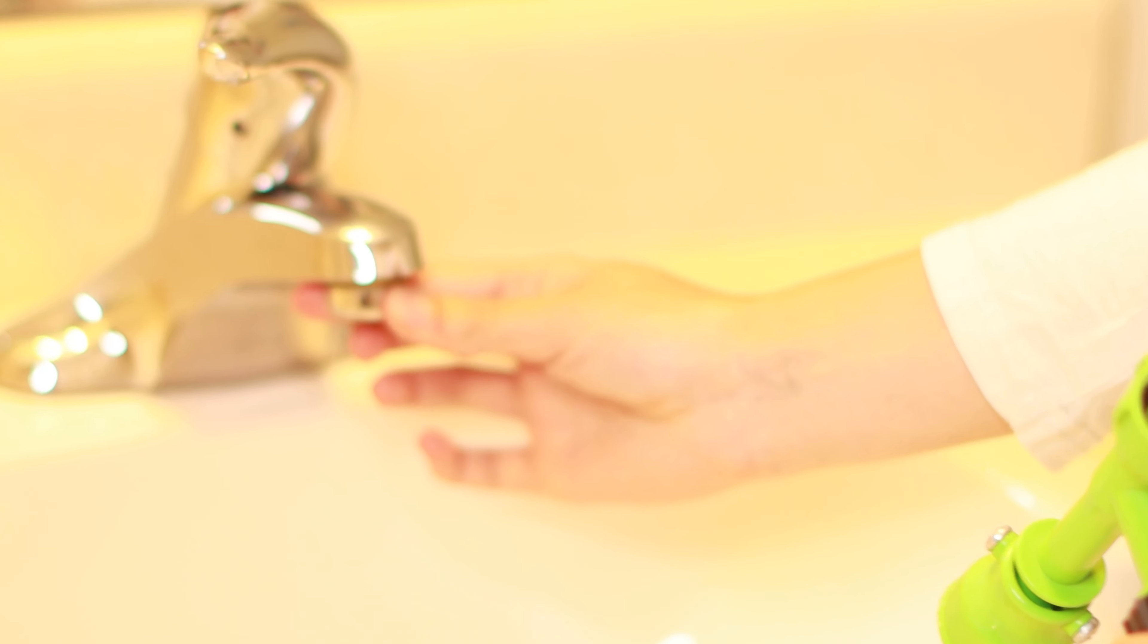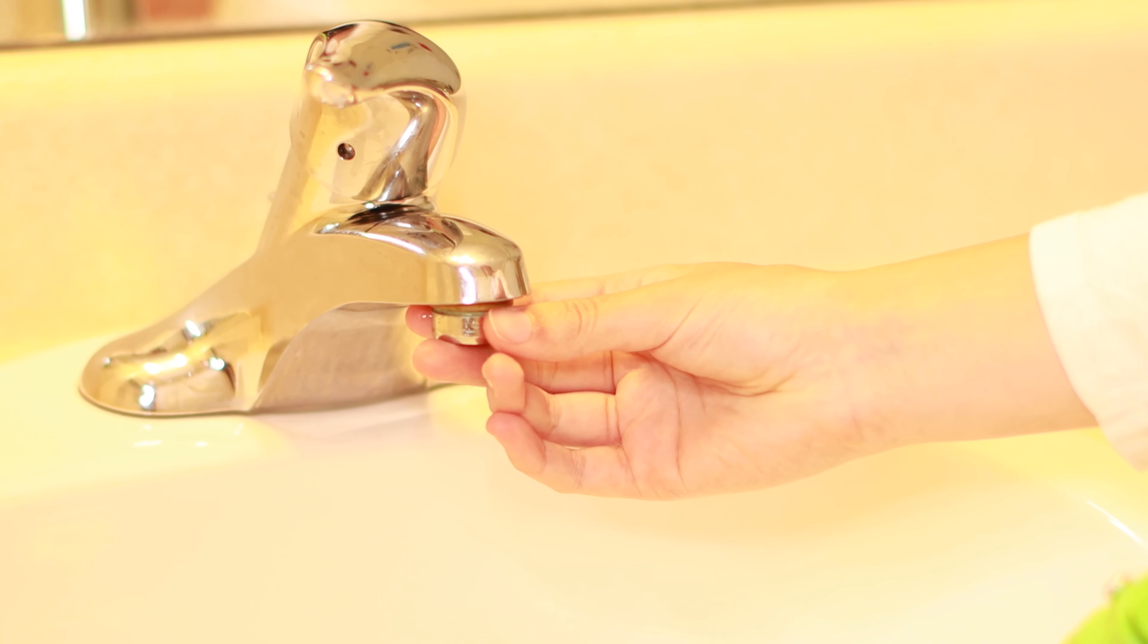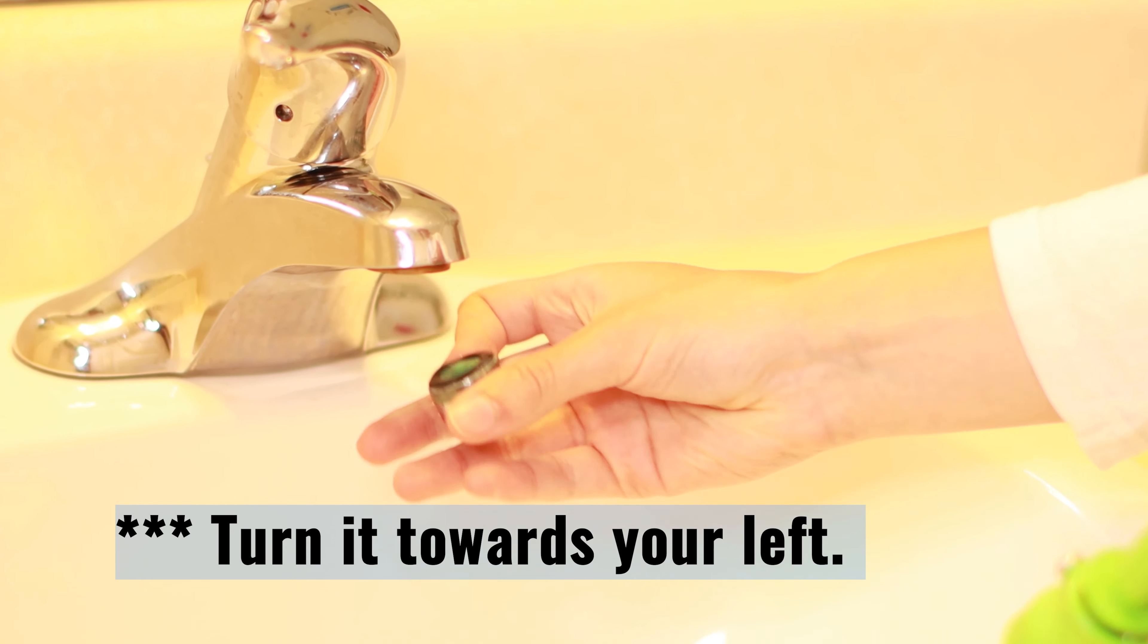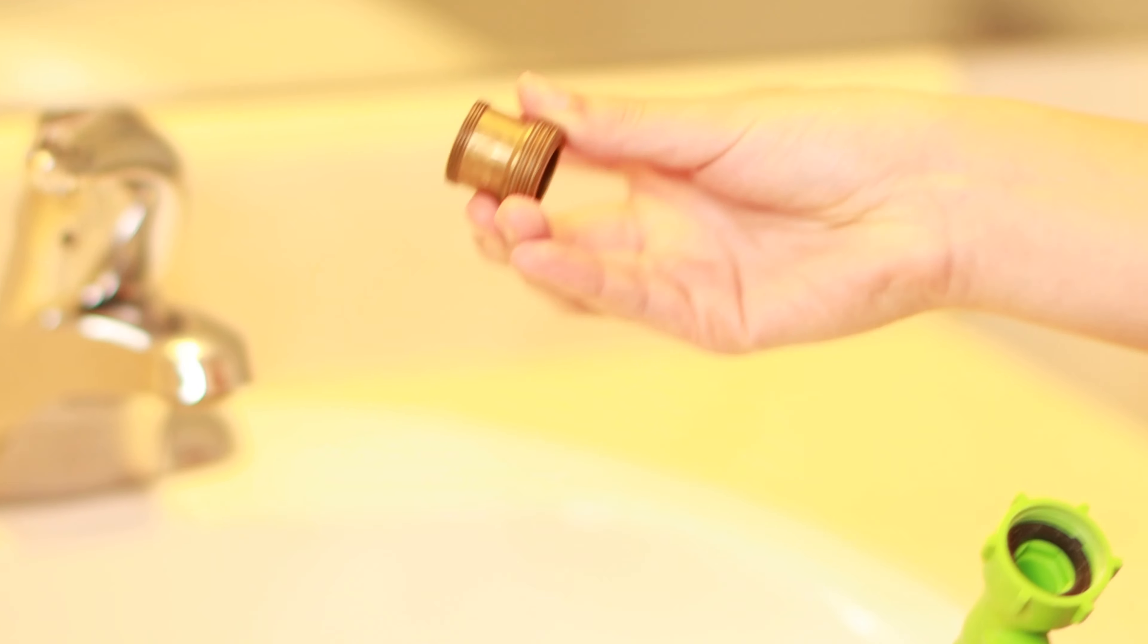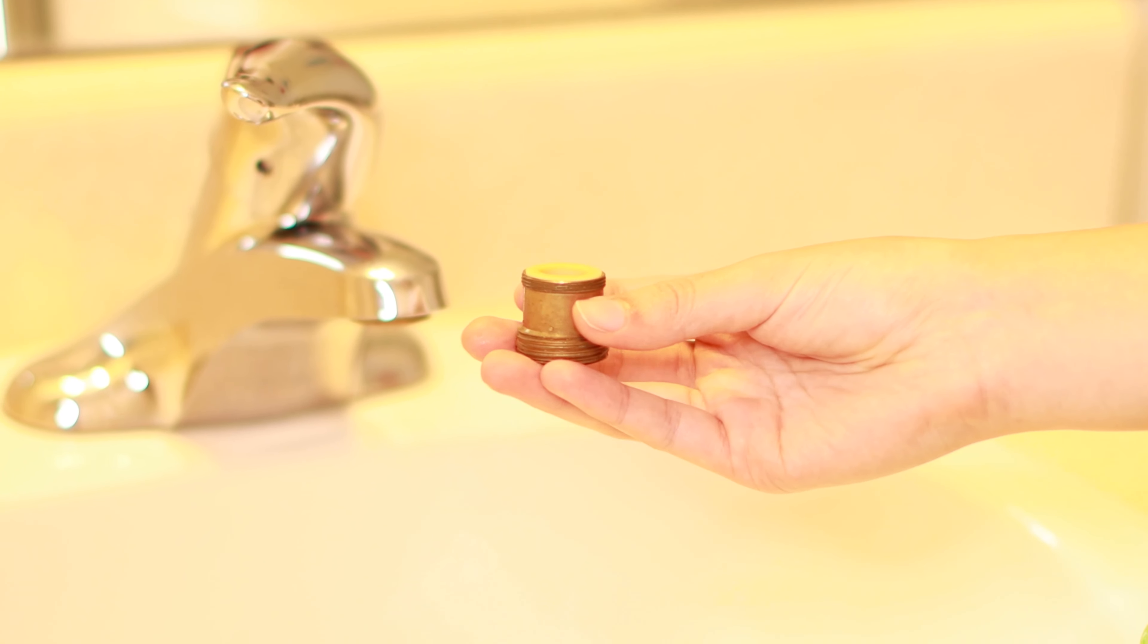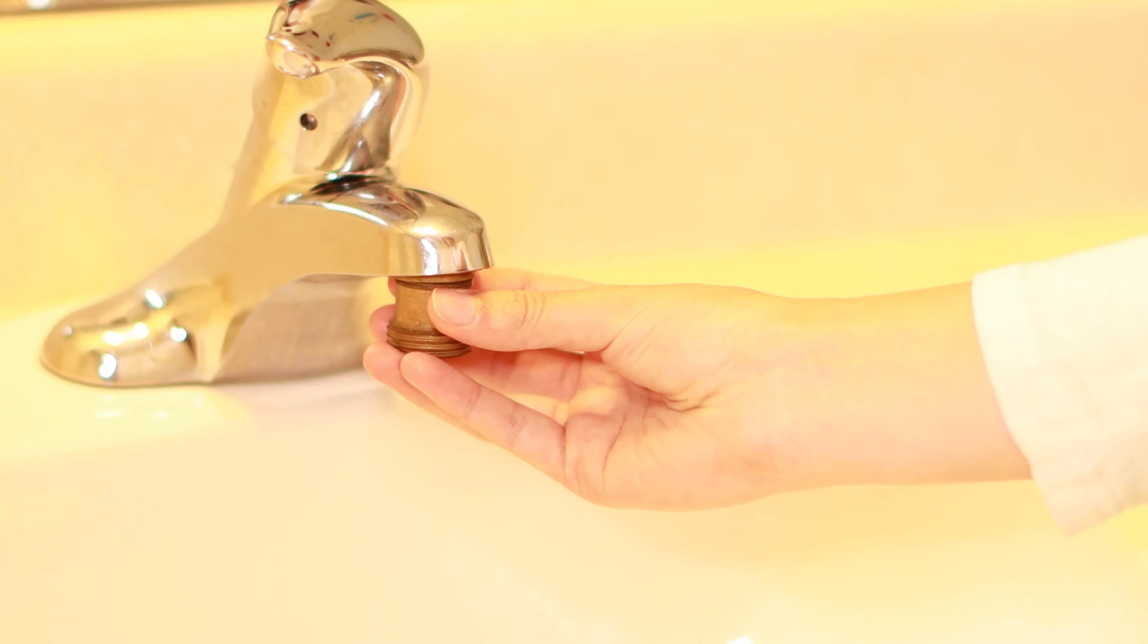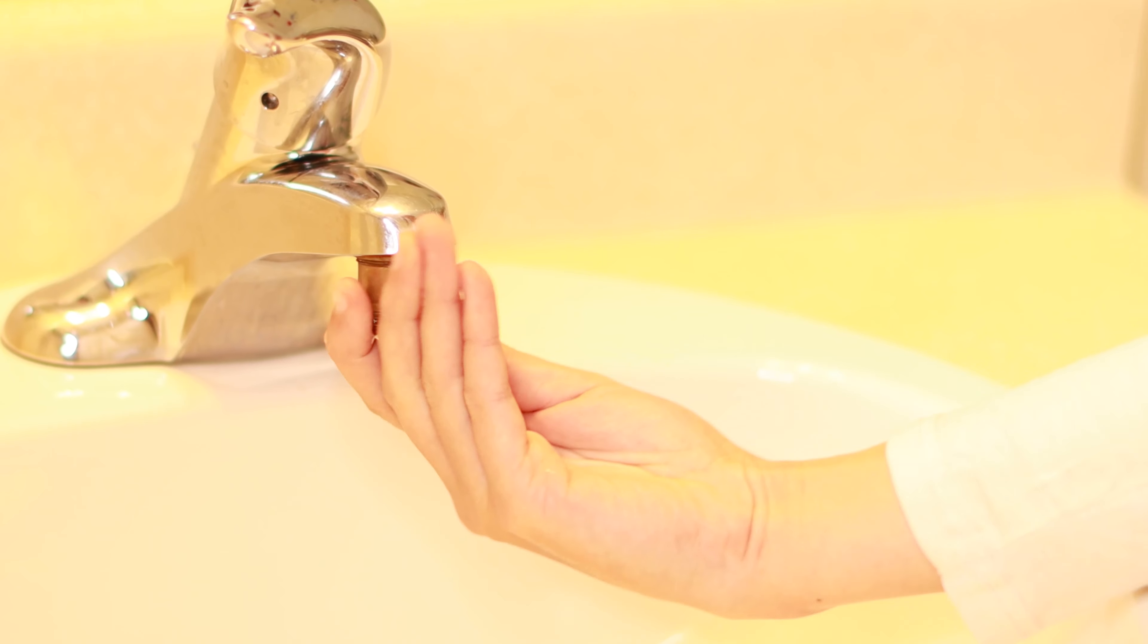Set that aside. Now we're going to unscrew this part of the faucet. Turn it towards your right, and it should become loosened. Then set that aside. Take the attachment here. Now we're going to screw this onto where that part of the faucet was. Try to get it to fit, then turn it towards your left.